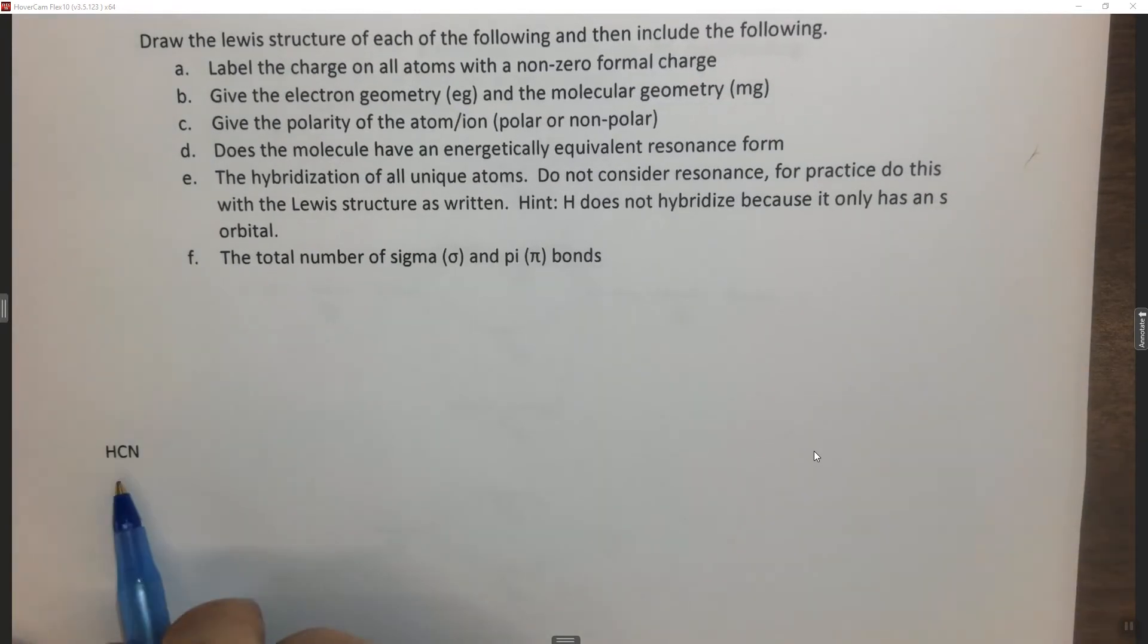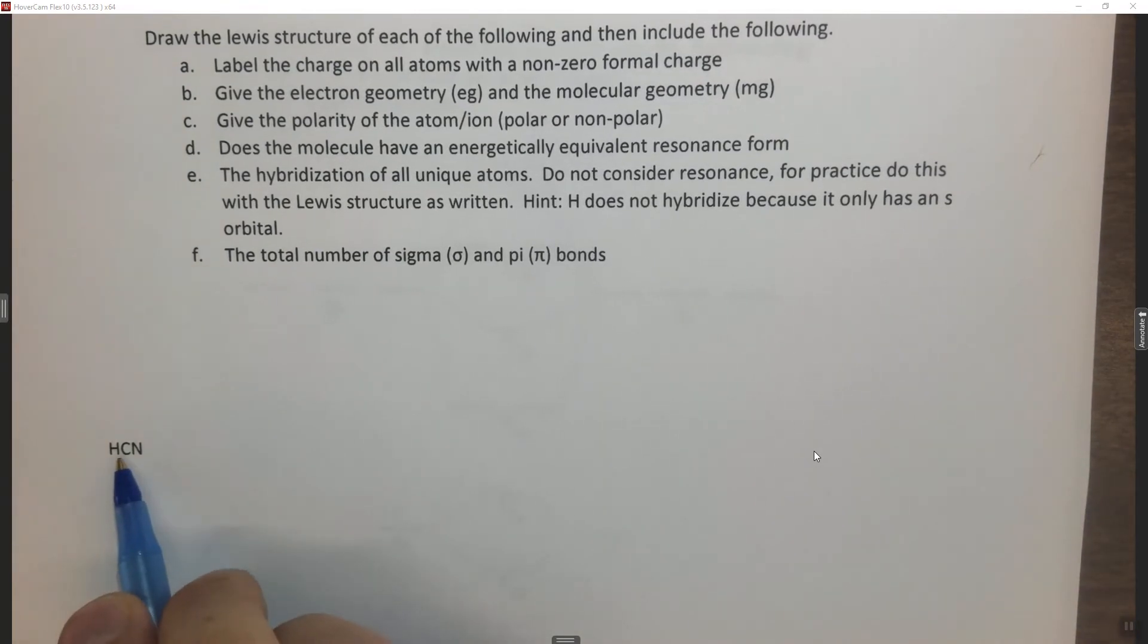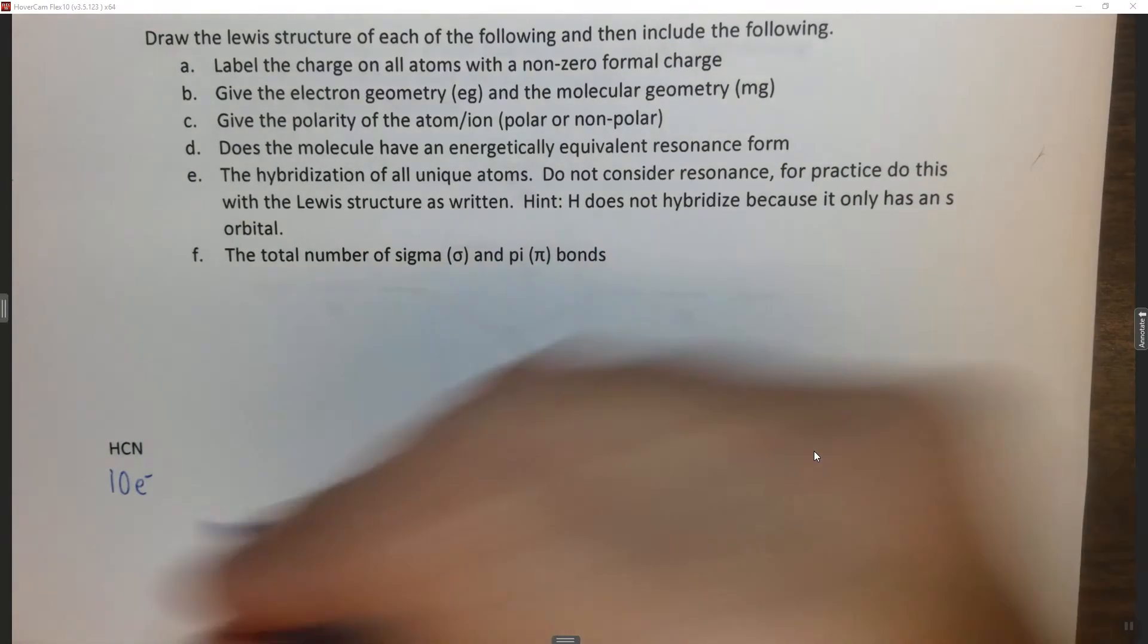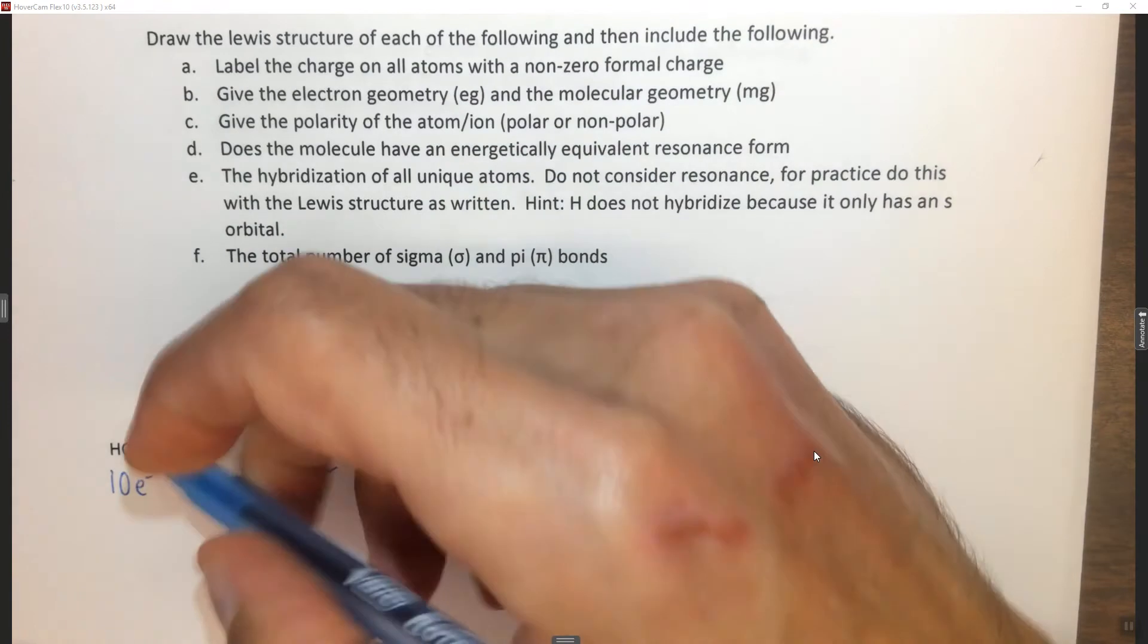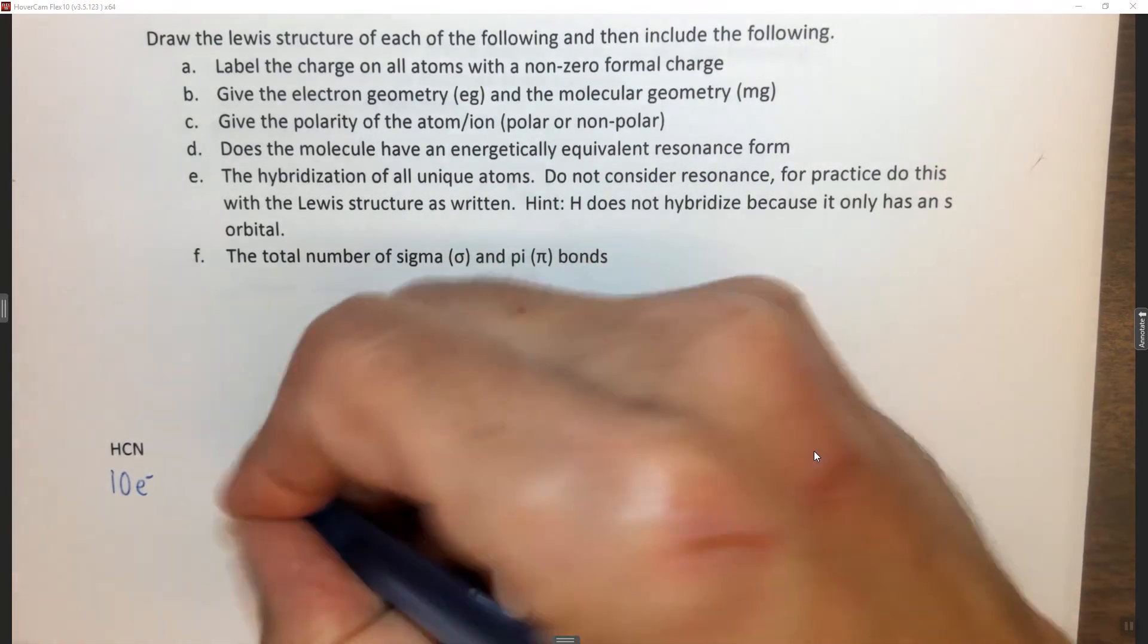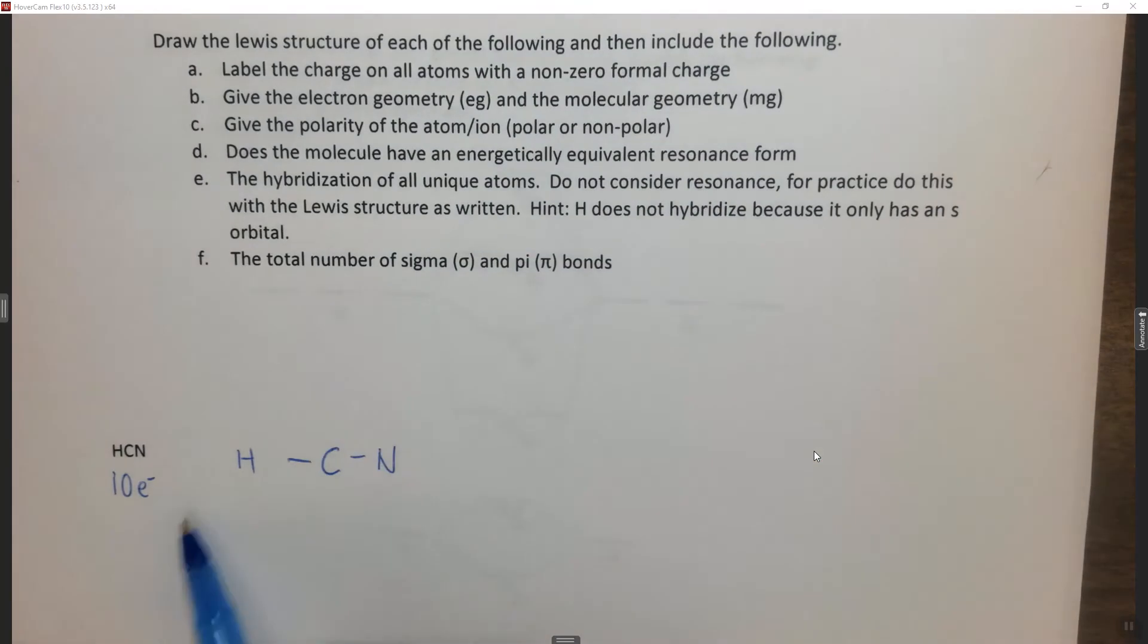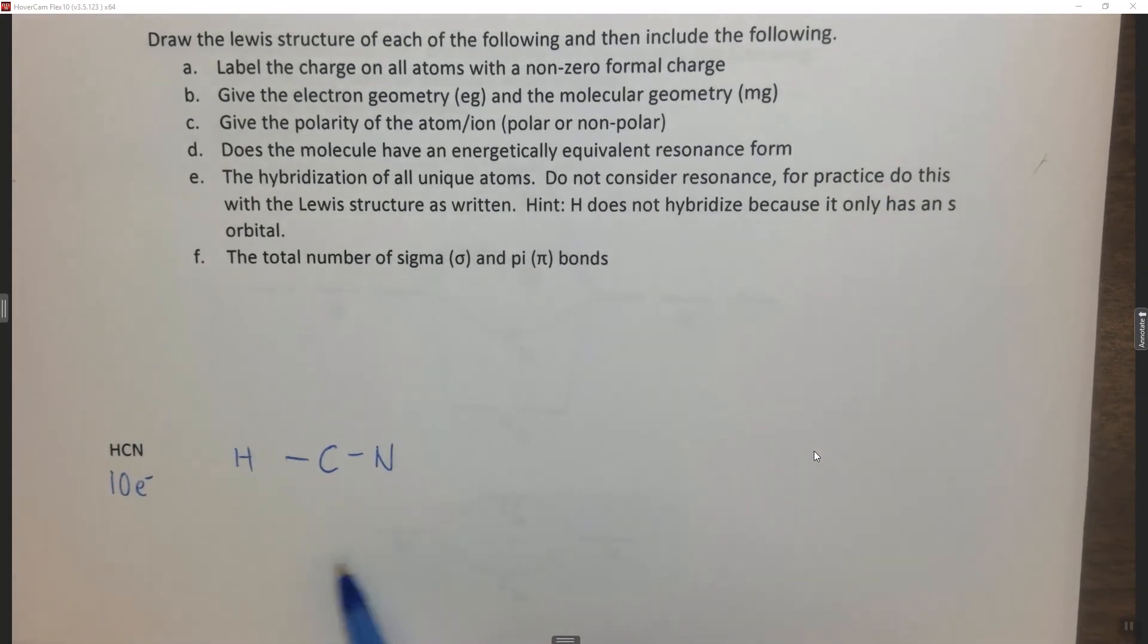So the first thing we want to do is count the valence electrons. We have 1 plus 4 plus 5 which is a total of 10 electrons. Put the least electronegative atom in the middle except for hydrogen. So we're going to have a carbon, a hydrogen and a nitrogen. This is hydrogen cyanide, a very poisonous gas, nasty stuff.